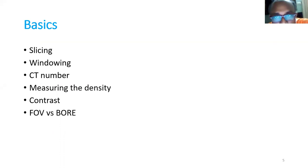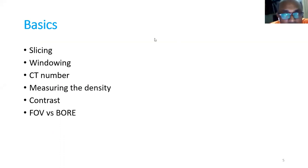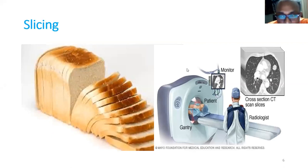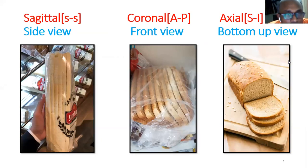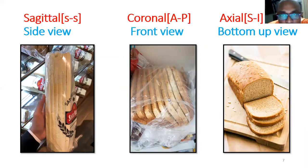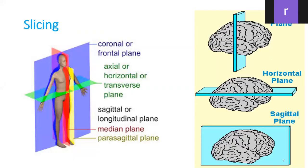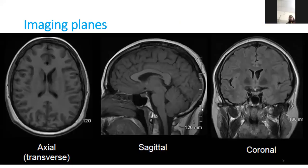Before going to the imaging details, we need to cover the basics: what is slicing, windowing, CT number, how to measure density, what is contrast, and what is FOV and bore. Slicing means making a cross-section of the body image. There are three types of slices: sagittal (side view), coronal (frontal view), and axial (top or bottom view). The coronal, horizontal, and sagittal planes are shown here.